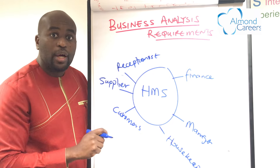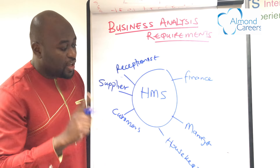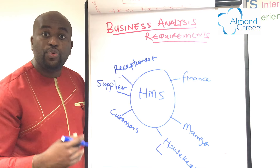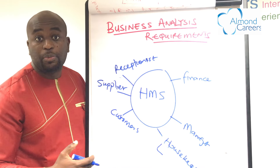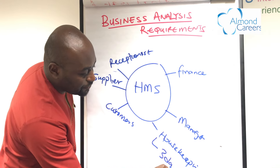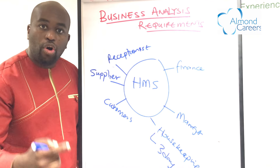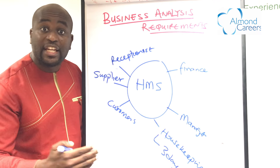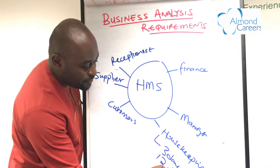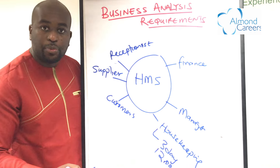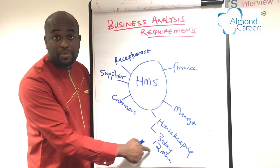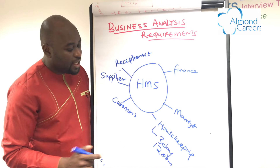After you've identified the users, the next thing is to identify what each user would be doing with the system. For example, the housekeeping team would want to see which rooms need to be checked out of in the next few days. If 12 rooms are checking out tomorrow, they know to prepare and clean those 12 rooms, getting them ready for new guests.